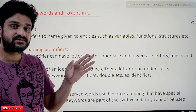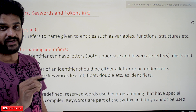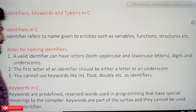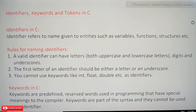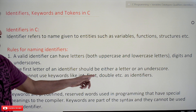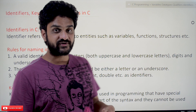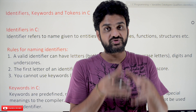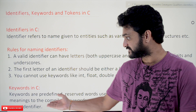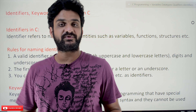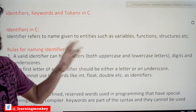The first letter of an identifier should be either a letter or an underscore — it should not start with a number. You cannot use keywords like int, float, double, etc. as identifiers. Keywords are reserved words for the compiler, so they should not be used as identifiers. We will understand the definition of keywords in the next section.